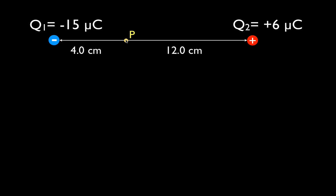Let's start by getting the direction of the electric fields from Q1 and Q2 at point P. Q1 is a negative charge. By definition, the electric field anywhere around a negative charge points towards that charge. Point P is over here, and towards that charge is to the left, so E1 points to the left.